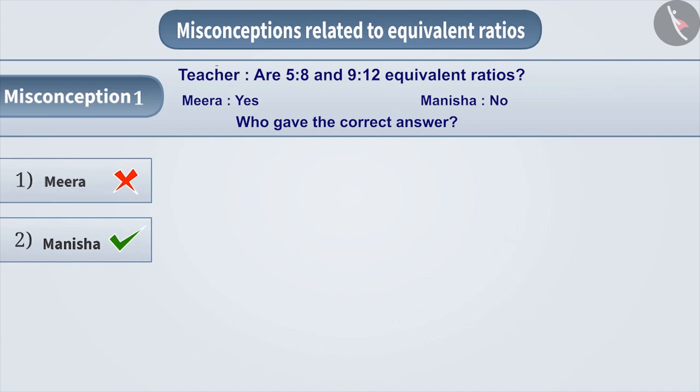So, Manisha has got the right answer. Manisha has understood that the ratios have to first be written as fractions and then their denominators have to be made the same. In order to do this, take the LCM of 8 and 12 which is 24.